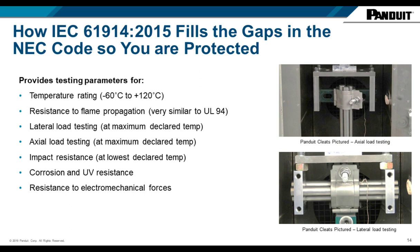We perform impact resistance testing at the lowest declared temperature — important for polymer cleats whose properties change dramatically at minus 40°C. We drop a known weight from a known height onto the weakest part of the cleat to check for fracture. We test against accelerated weathering, looking at corrosion and UV resistance, and we also test the electromechanical forces.